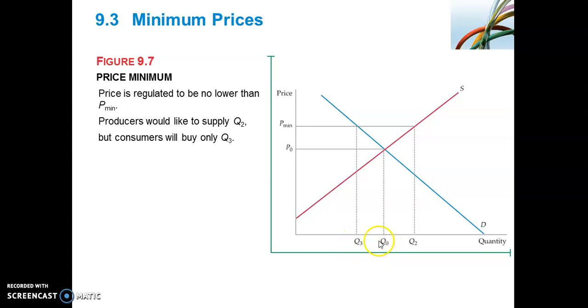So therefore the quantity demanded by consumers has fallen from Q0 to Q3. As a result of this, there would be an excess supply because the quantity demanded at the minimum price is at Q3. But the quantity supplied, producers would like to supply at Q2. But if producers were to realize that consumers would only buy Q3 and they were to only then supply this output Q3, then there would not be that excess supply or market surplus. However, there would still be a deadweight loss that would arise as well as a loss to consumer surplus and producer surplus.